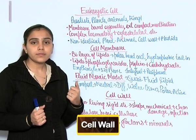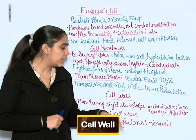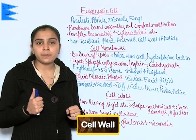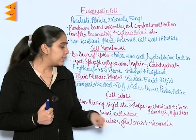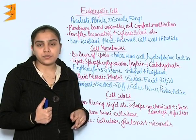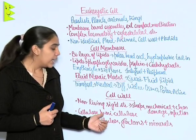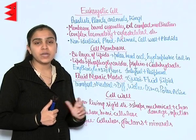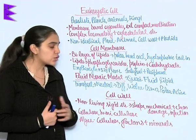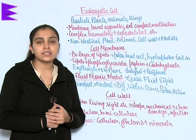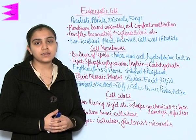Cell wall is a non-living rigid structure. It provides shape as well as prevention of mechanical and chemical damage, and protects the cell from various infections. In the case of plants, it is made up of cellulose and hemicellulose. Whereas in the case of algae, it is made up of cellulose, gelatinous substances, galactins, and various other minerals.